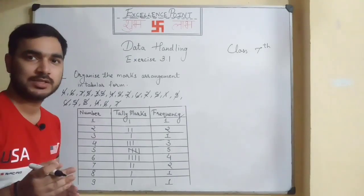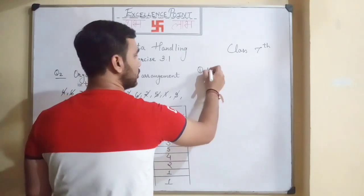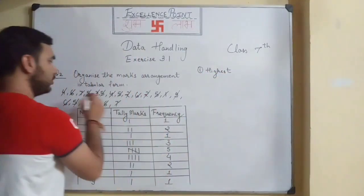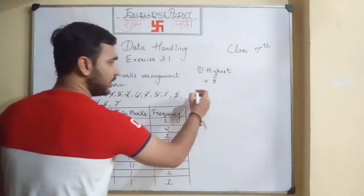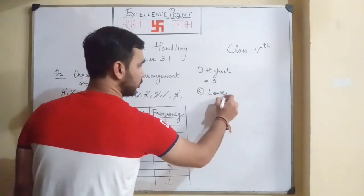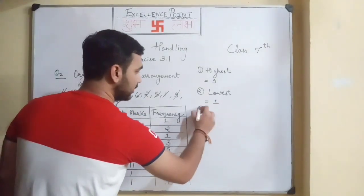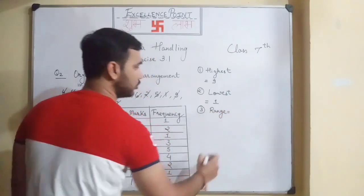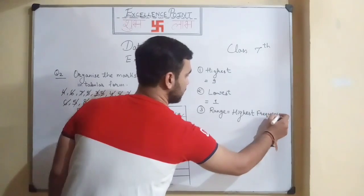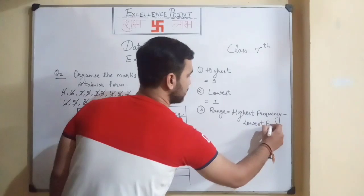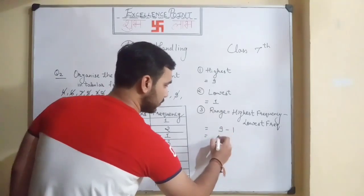Similarly, we have to find the highest value, lowest value, range, and arithmetic mean. The highest value among all is nine, and the lowest value is one. For the range, the formula is: range equals highest frequency minus lowest frequency.